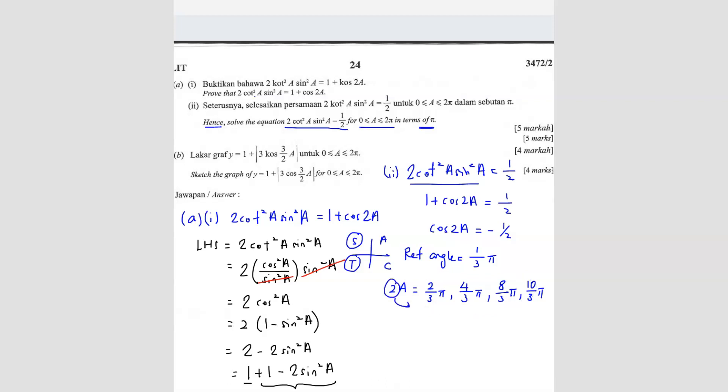So the question is asking you to solve for A, so that means you have to find not 2A, you have to find A. So that means the whole thing here, you have to divide by 2 because you got the 2 here. So you shift over, you have to divide. So A is equals to 1 over 3 pi, 2 over 3 pi, 4 over 3 pi, and 5 over 3 pi. So these are your answers.